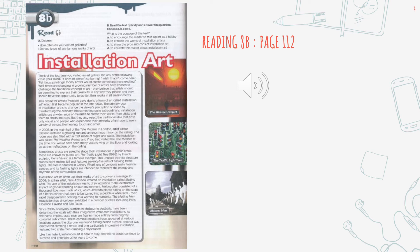This desire for artistic freedom gave rise to a form of art called installation art, which first became popular in the late 1960s. The primary goal of installation art is to change the viewer's perception of space by transforming the ordinary into something quite extraordinary. Installation artists use a wide range of materials to create their works — from sticks and foam to chairs and cars. But they also reject the traditional idea that art is only visual, and people who experience their artworks often have to use a variety of senses like hearing, touch, and smell.